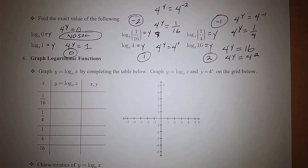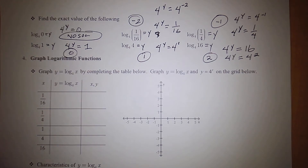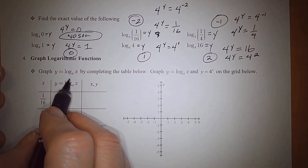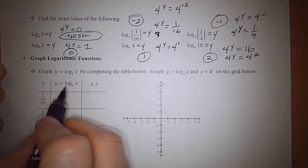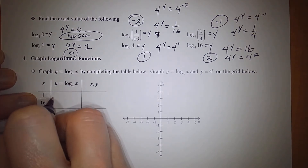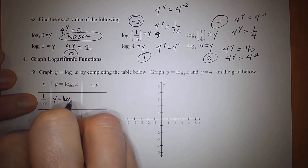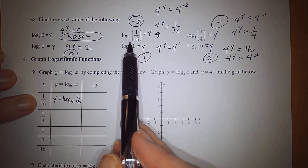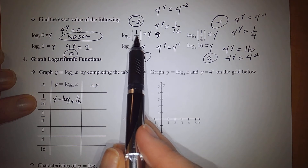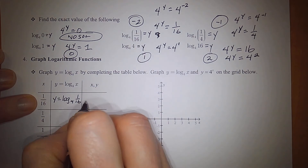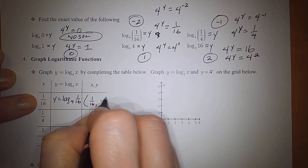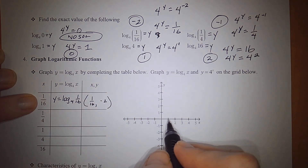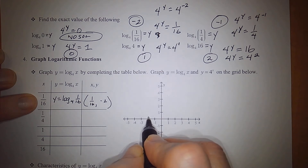Now we'll look at what the graph of a logarithmic function looks like. For y equals log base 4 of x, we build a table of values. When x equals 1/16, y equals log base 4 of 1/16, which we found to be negative 2. So we have a point at (1/16, negative 2).